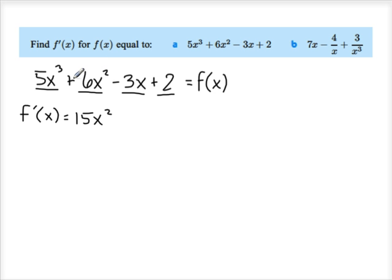For the second term, it's a positive 6, and I have an exponent of 2, so I have 2 times positive 6, which gives me a positive or a plus 12. There's my x there. And I'm going to subtract this by 1, so I'm going to go from 2 to 1, which means I just simply have an x, so I'm done there.